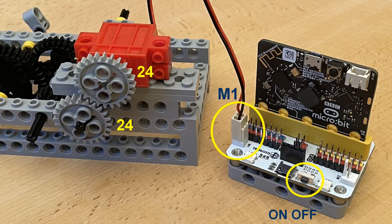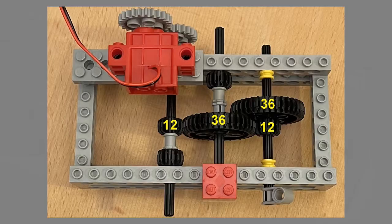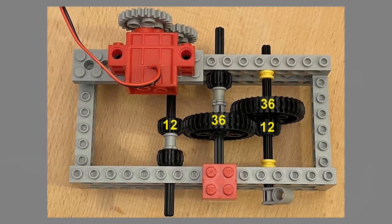They both have 24 teeth. If you choose the black gear wheels for the drive shaft, the gearbox looks like this.